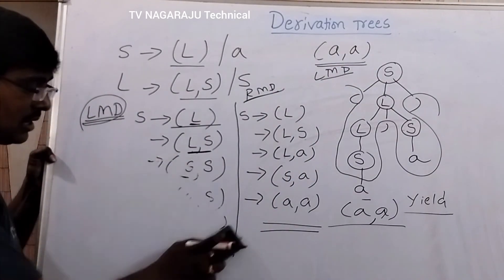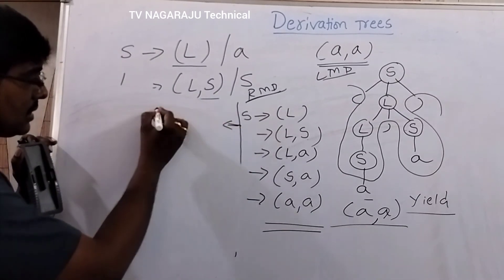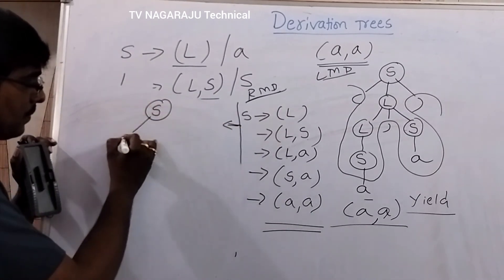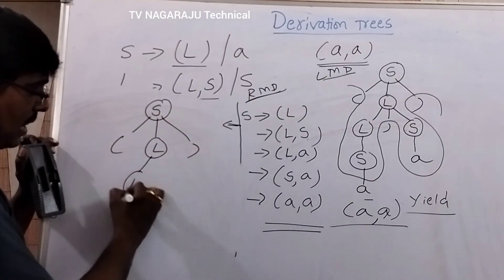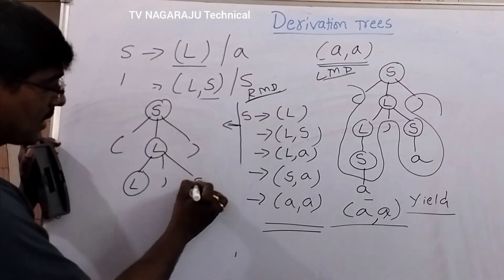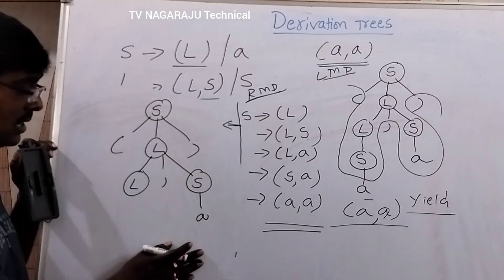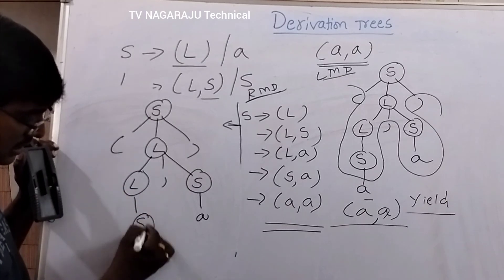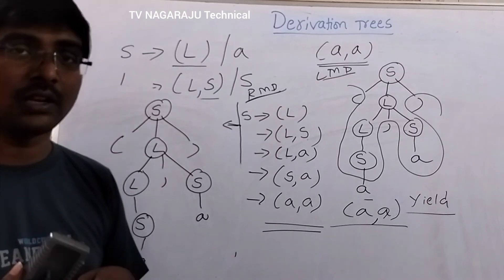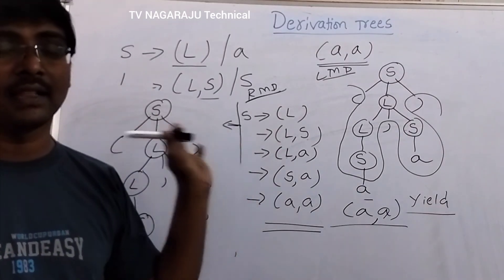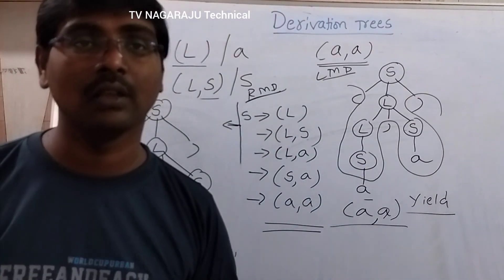Now I will construct the rightmost derivation tree also. In the same fashion, starting from S, L is replaced with L,S. In the next step, we replace the rightmost S with a. Then L is replaced with S, and S is replaced with a. Even though we get the same derivation tree, the order of replacement — left to right or right to left — is changed. This is the concept of derivation tree. Thank you.